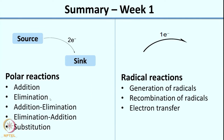We also looked at the different types of polar reactions: addition reactions, elimination reactions, addition-elimination, elimination-addition, and substitution reactions. The next thing we looked at was radical reactions. In radical reactions the main difference is that you use the single-headed arrow, also called a fish hook arrow, which indicates movement of a single electron. Radical reactions involve generation of radicals, recombination of radicals, and the process of electron transfer.